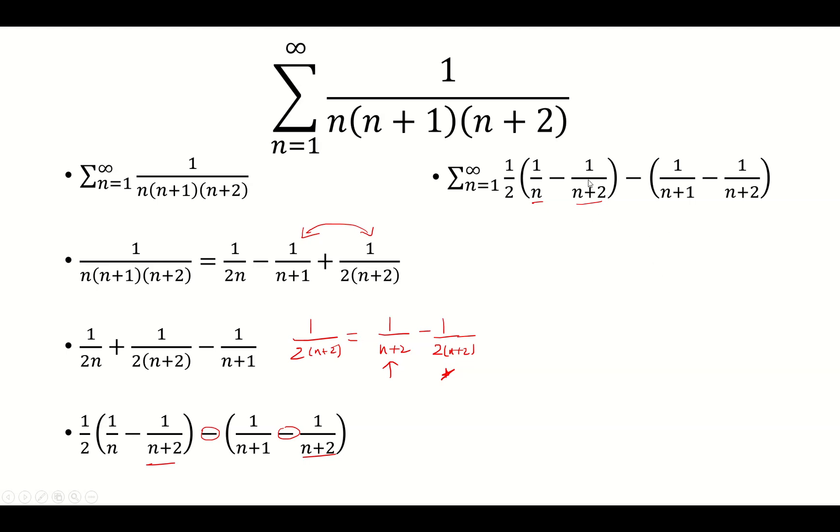So basically, this cancels everything except for the first two terms. And then this 1 over n plus 2 cancels everything except for the first term, because these are 1 apart from each other.